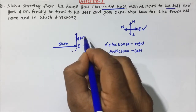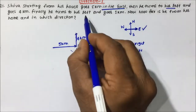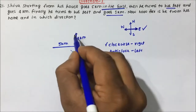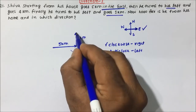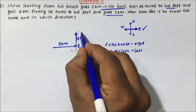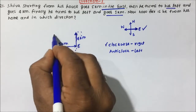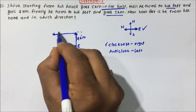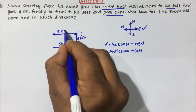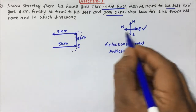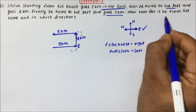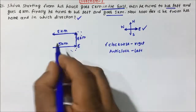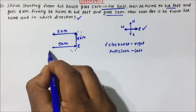So Siwa is going 4 kilometers to his left. Finally, he turns to his left again and goes 5 kilometers. Put your pen point here — clockwise means right, so this side is right and the other side is left. So again he is going 5 kilometers towards his left.